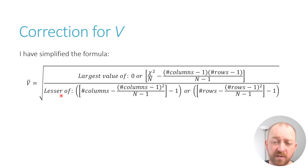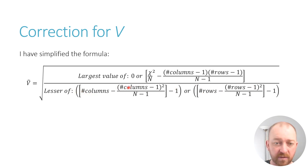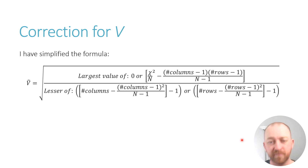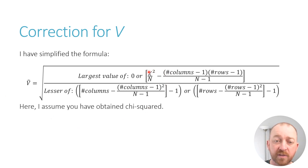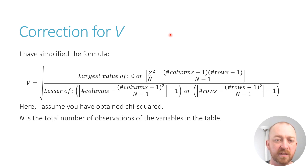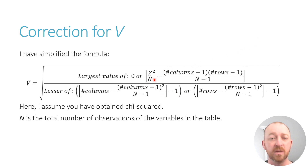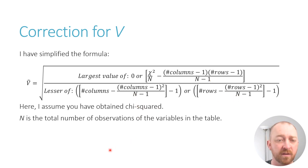Down here in the denominator you either use the number of columns or the number of rows — whichever you have fewer of. So if I have two rows and three columns, I have fewer rows, and I would just enter the rows there. Up in the numerator it calls for the chi-square value you've obtained. The only other thing you'll need to input is the total number of observations N, and then you subtract one — it's the same N value in all these locations.